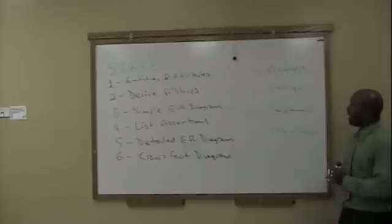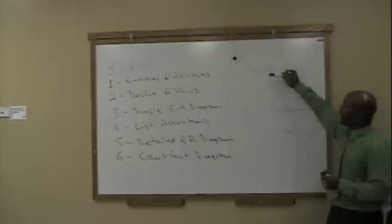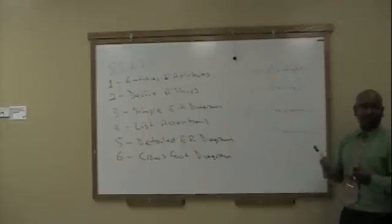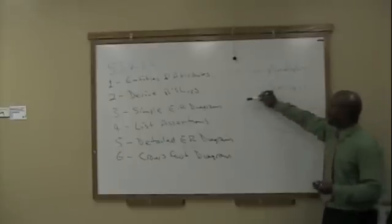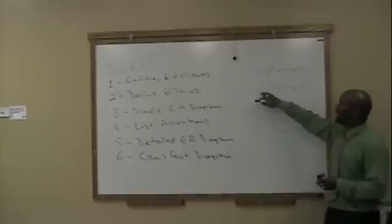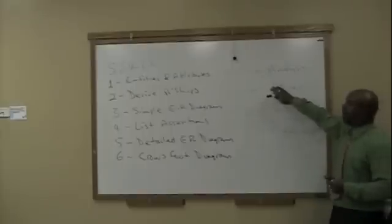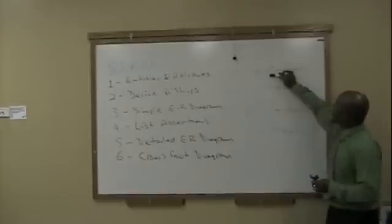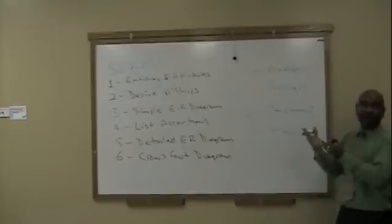Now, there are some important distinctions between the two in that the ER diagram is the user's view. And it's also what we call a conceptual model. The relational model diagram is the developer's view. And that is what we call the implementation model. Because this is what you're going to implement. Remember that the ER diagram has to do with the user and how the user or the client sees their data.